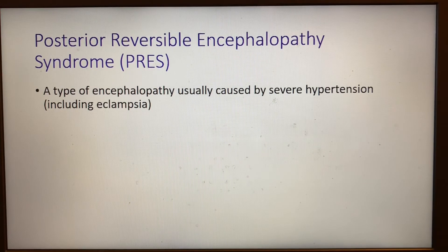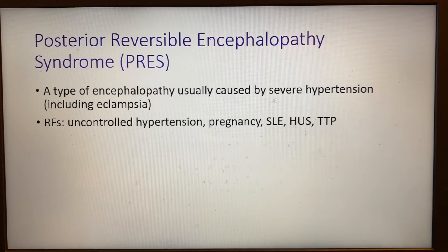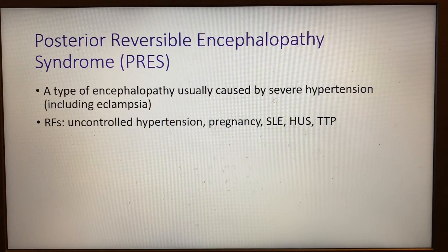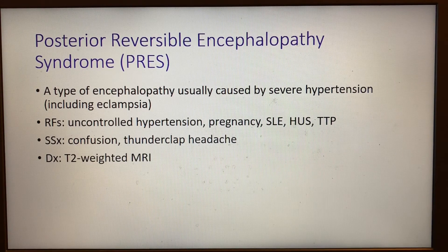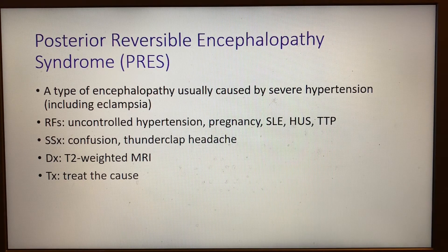Posterior reversible encephalopathy syndrome, or PRES, is an encephalopathy caused by severe hypertension and can sometimes be the presenting complaint for eclampsia. Risk factors include uncontrolled hypertension, pregnancy, lupus, hemolytic uremic syndrome, or thrombotic thrombocytopenic purpura. Signs and symptoms include confusion and thunderclap headache. Diagnosis is made by T2-weighted MRI, and treatment involves addressing the underlying cause — in pregnancy, this would be to deliver the fetus.